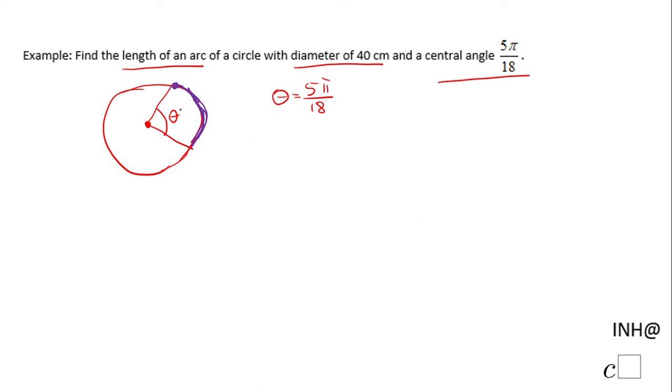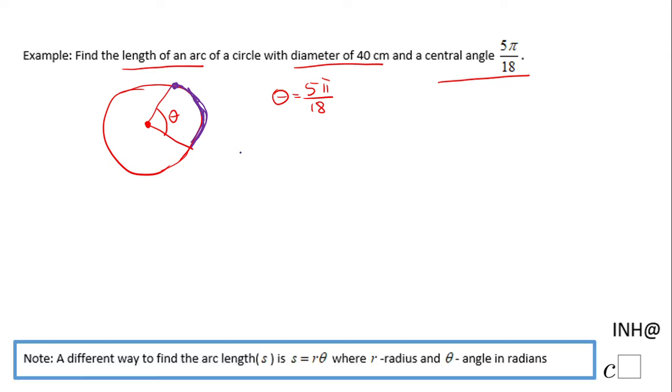The arc length formula is s equals r times θ, where r is the radius of the circle and θ is the angle in radians. If we have the radius and the angle in radians, we can find the arc length very fast.